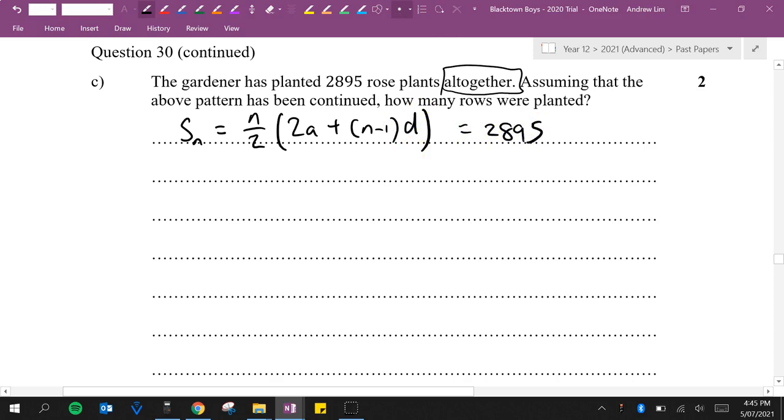But we don't know what N is equal to. We do know what A is equal to and we do know what D is equal to. So we need to work out what N is, the number of rows. So we've got 2,895 is equal to N over 2 times A was 24, so 2 times 24 is 48, plus N minus 1D. D is 5.